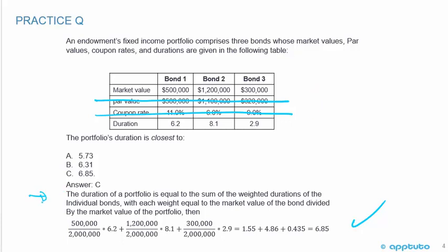The duration of a portfolio equals the sum of the weighted durations of individual bonds, with each weight equal to the market value of the bond divided by the market value of the portfolio. So: 1.2 million plus 500,000 plus 300,000 gives a nice round number of 2 million.